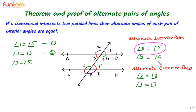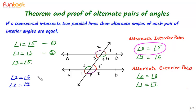Next we can take angle 4 and angle 6. Using the same approach, we identify a pair of corresponding angles which includes either angle 4 or angle 6. So angle 2 is equal to angle 6 by the corresponding angle axiom — call this equation 3. And angle 2 is equal to angle 4 by vertically opposite angles — call this equation 4. From equations 3 and 4, we can have angle 4 is equal to angle 6. So we have proved that each pair of alternate interior angles is equal.